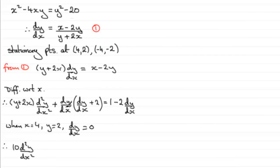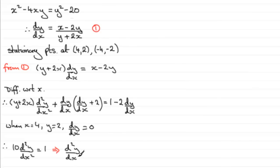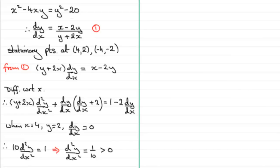Since dy/dx = 0, the second term on the left vanishes, and the −2·dy/dx term on the right also vanishes, leaving the simple equation 10 · d²y/dx² = 1. Therefore d²y/dx² = 1/10, which is positive — greater than zero — so the stationary point at (4, 2) is a local minimum.